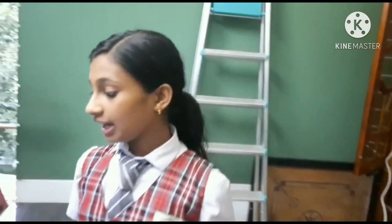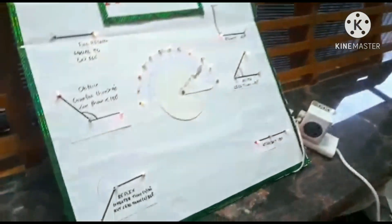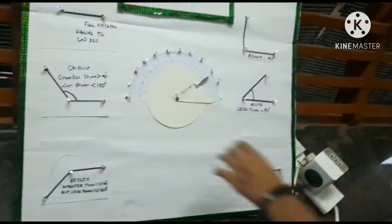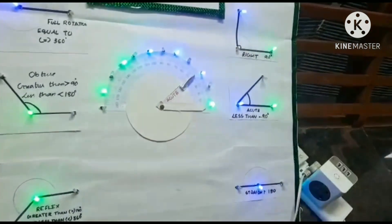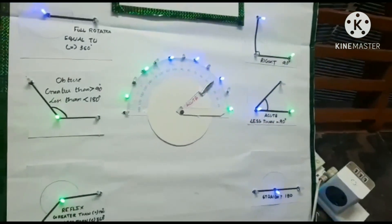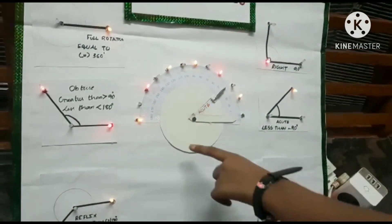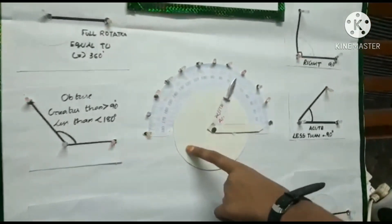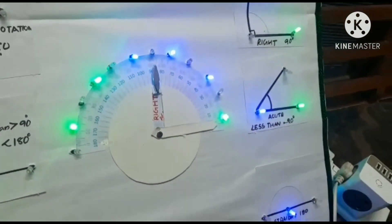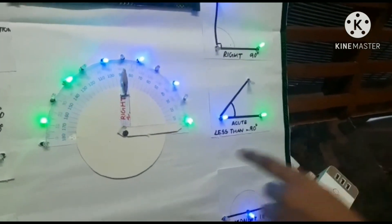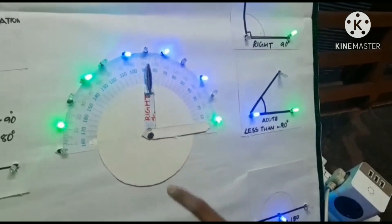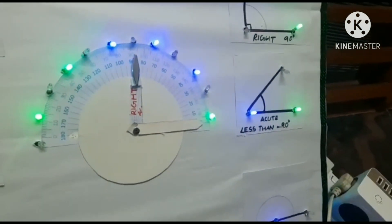My name is Valza Naurin and I am studying in 8th grade. Today I will introduce the types of angles using an angle machine. First, I would like to show the acute angle. An acute angle is an angle that measures between 0 degrees and 90 degrees.